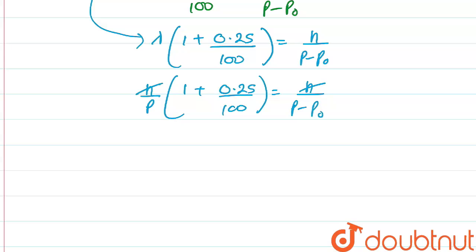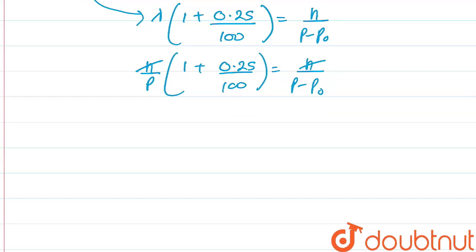This h will cancel this h and we will be getting this p minus p0 will come this side. So we can write p minus p0 into 1 plus 0.25 upon 100, and this p will come this side, that is p.